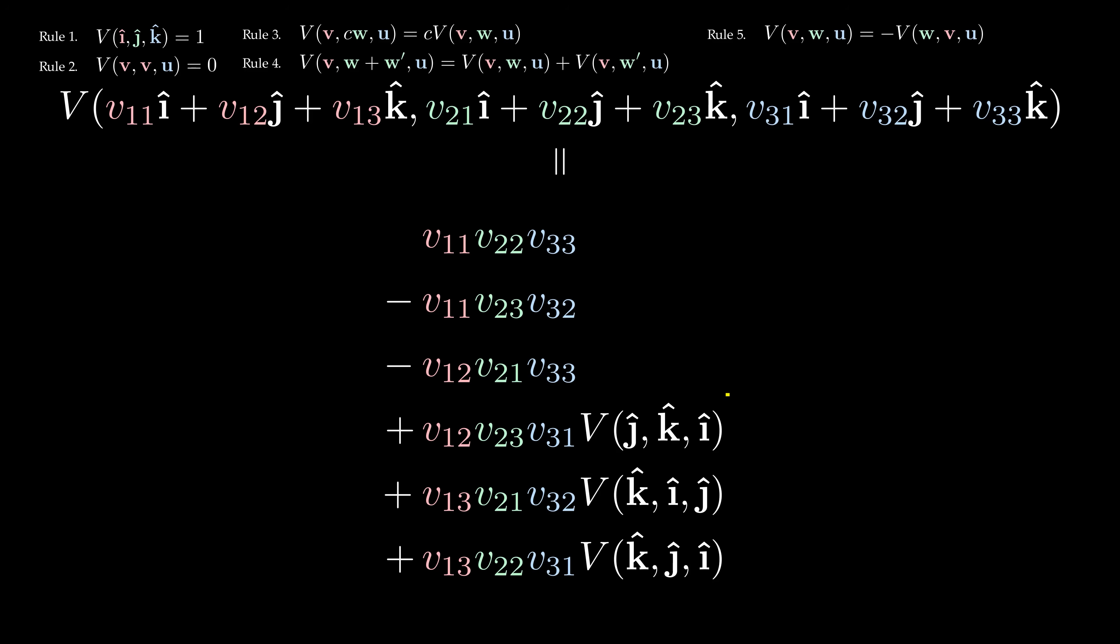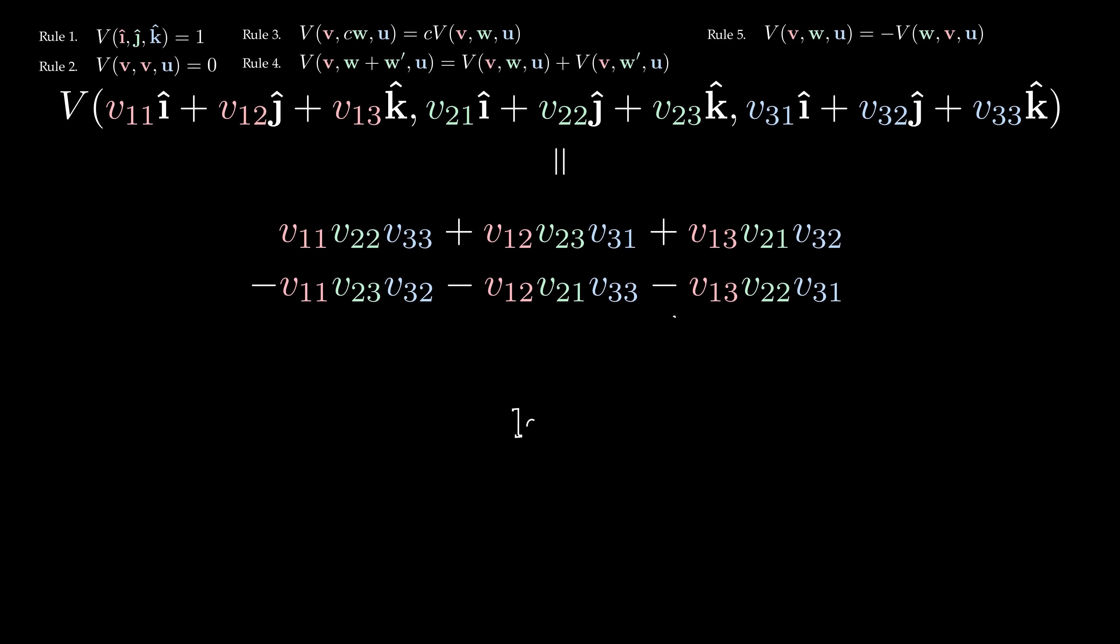Since each swap introduces a minus sign, the sign of the term depends on how many swaps it takes to rearrange the vectors into i, j, k order. In particular, whether the number of swaps was even, or odd.